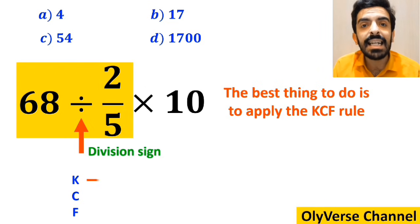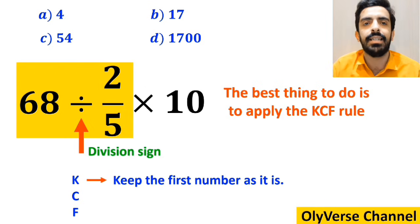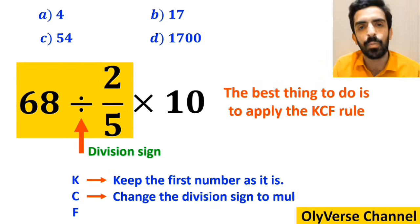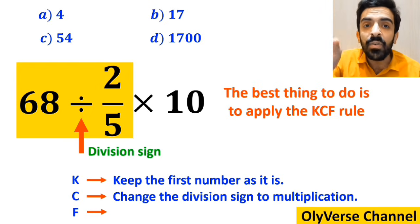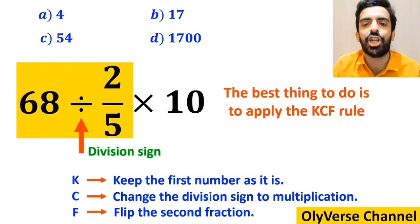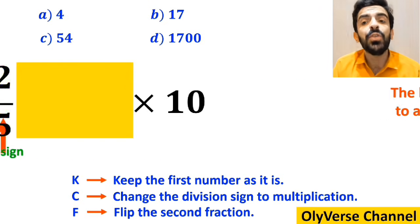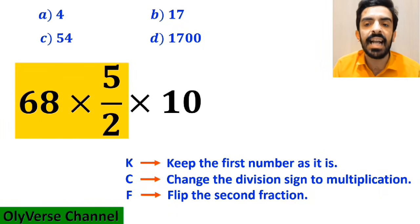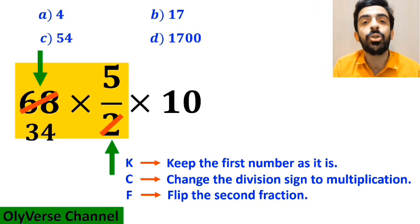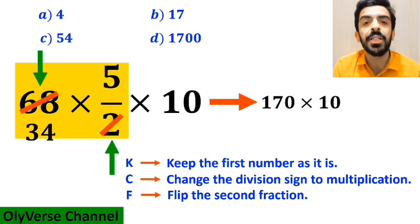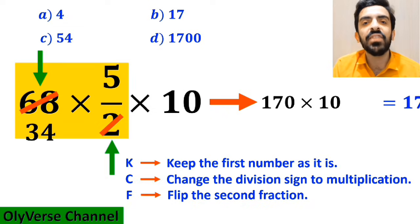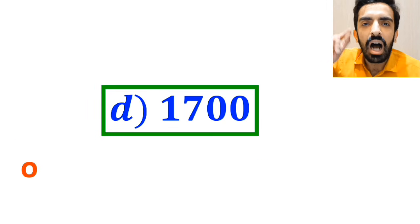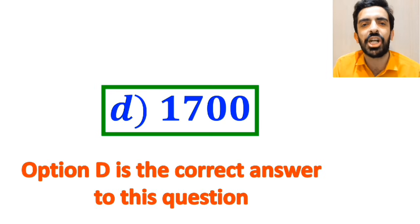Whenever we come across a division sign between two terms, we apply the KCF rule: K stands for keep the first number as it is, C stands for change the division sign to multiplication, and F stands for flip the second fraction. So we replace it with 68 multiplied by 5/2. The 68 cancels with the 2 in the denominator, simplifying to 170 multiplied by 10, which gives us the answer 1700. Therefore, option D is the correct answer.